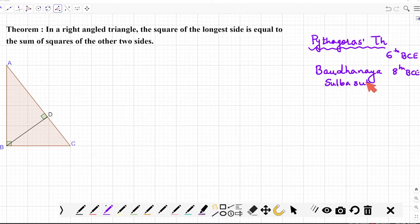So the book he wrote, or these people wrote, called Sulba Sutras—these are post Vedic literature. In these books, the proof for this theorem has been discussed.